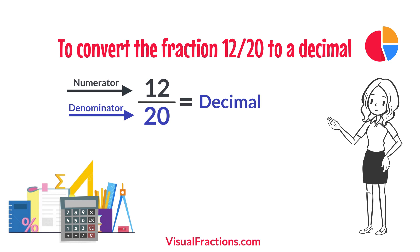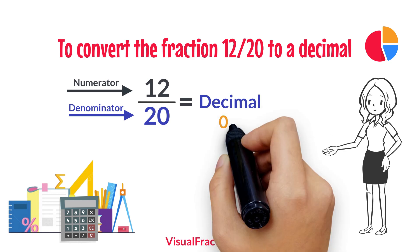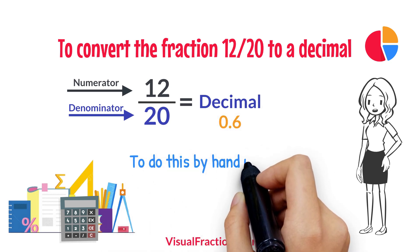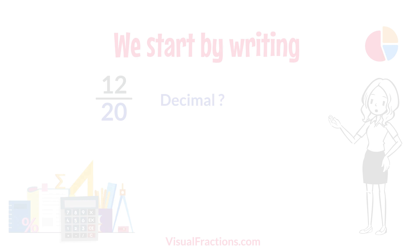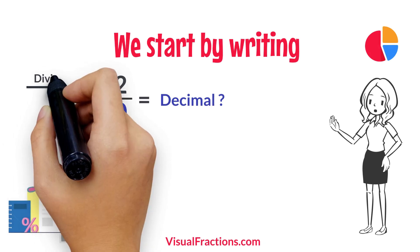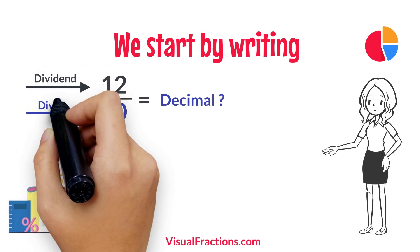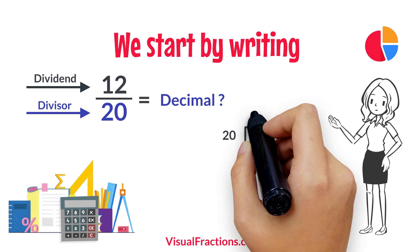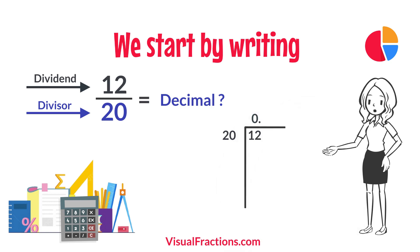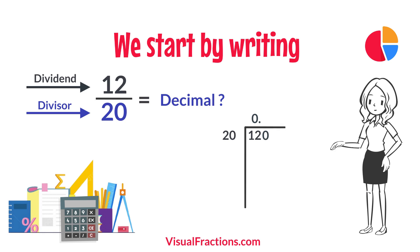The answer we get is 0.6. To do this by hand using long division, we start by writing 12 as the dividend and 20 as the divisor. Since 20 doesn't fit into 12, we add a decimal point in our answer and append a 0 to 12, making it 120.